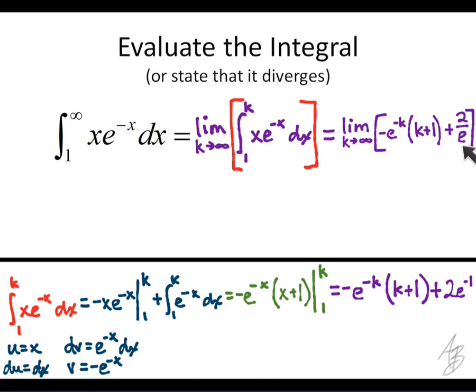This term right here is a constant. It doesn't depend on k. So whether k approaches infinity or negative infinity or something in between, this 2 over e is not going to change.